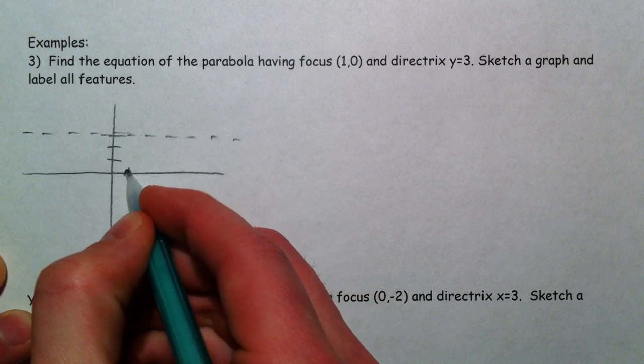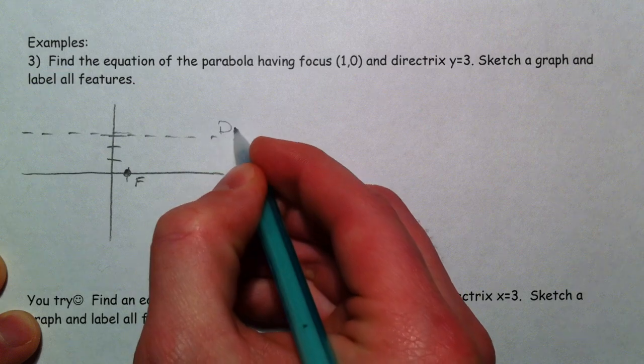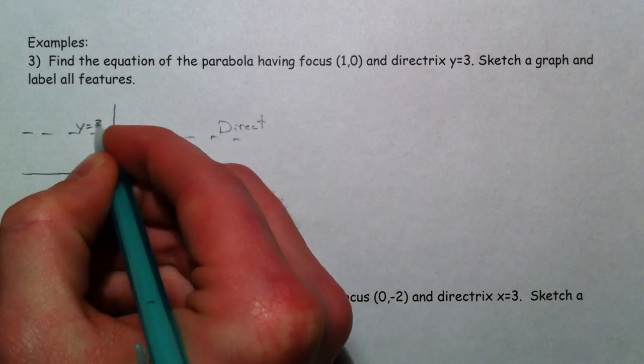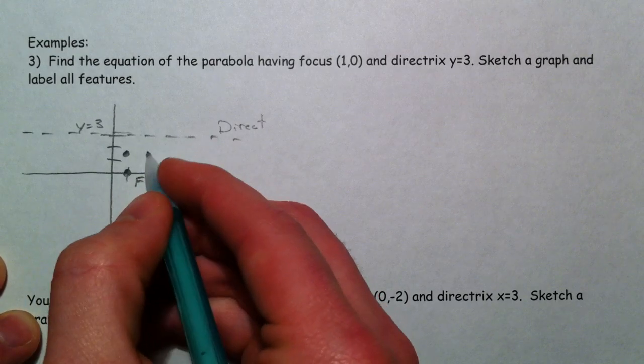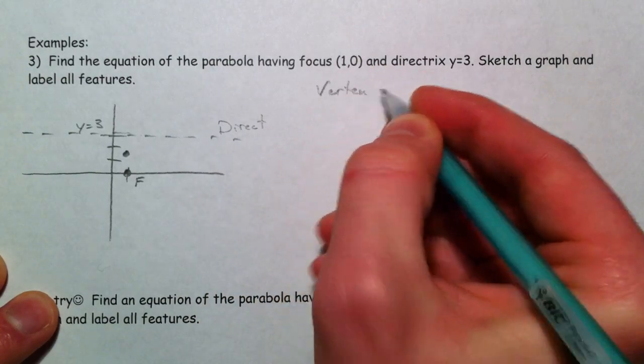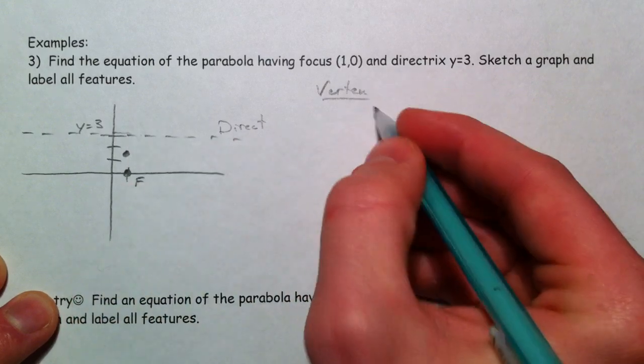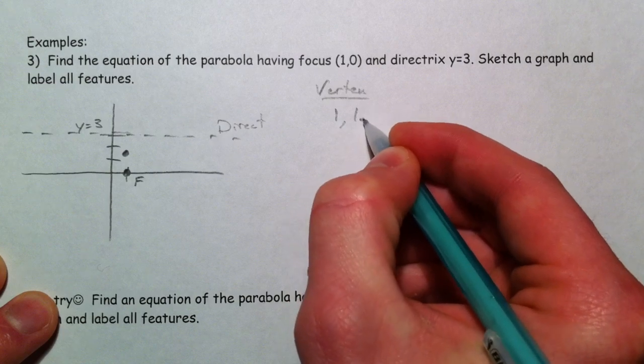So this is the focus, and this is the directrix, y equals 3. Just like we did before, the vertex then has to be right in the middle of it. And so the vertex—what's in between 0 and 3? 1.5. So it'll be (1, 1.5).